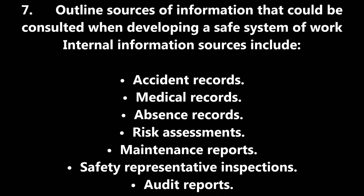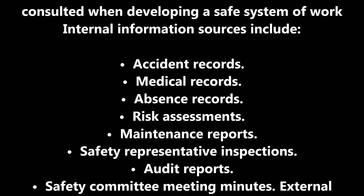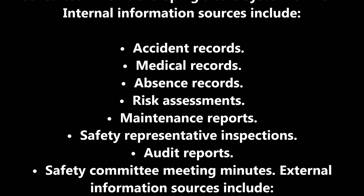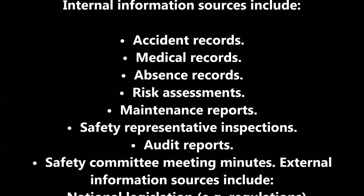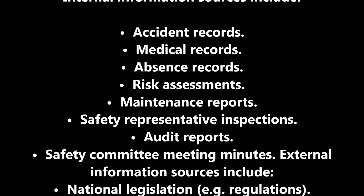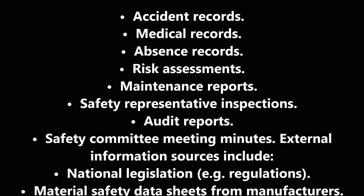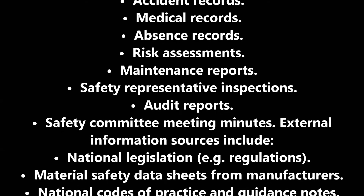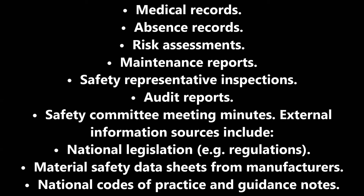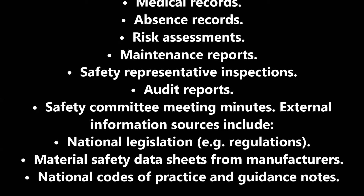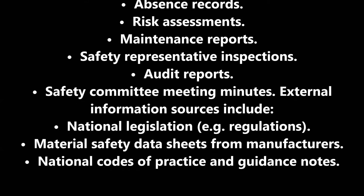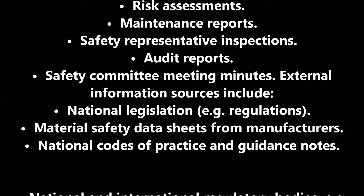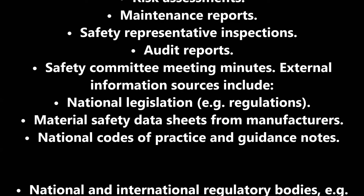Question 6: Give the meaning of the term 'safe system of work.' A safe system of work is a formal procedure based on a systematic examination of work in order to identify the hazards. It defines safe methods of working which eliminate those hazards or minimise the risks associated with them.